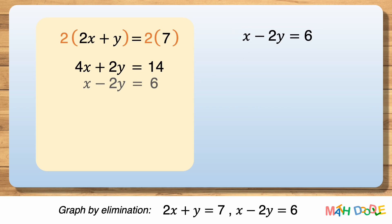Now, we can see that by adding the equations vertically, we can eliminate y. So, let's add the equations. 5x equals 20.